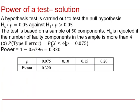So first of all, we need the power of this test when p in reality equals 0.075, not 0.05. We require the probability that the number of faulty components X is less than or equal to 4 when p is 0.075. That can be obtained directly from a calculator, and then the power of the test when p is 0.075 is obtained by subtracting from 1.